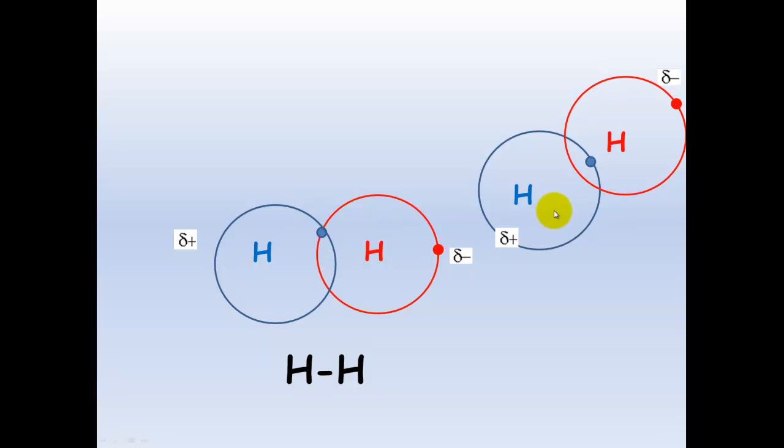So if we have another hydrogen molecule appear and the same instantaneous dipole set up here where the electrons are all on one side of the molecule, we get a delta negative on this side and a delta positive on this side. This delta positive and this delta negative will attract just for a millisecond, but they will attract to one another. And this is called a dispersion force. And this is enough for molecules to attract to one another.